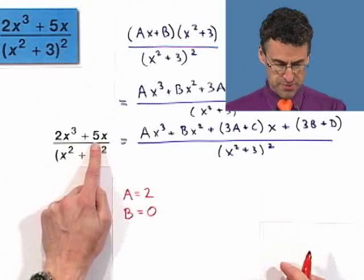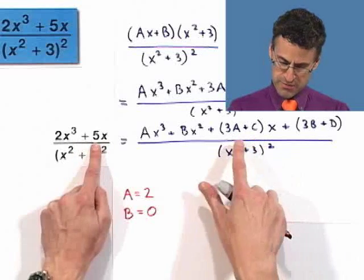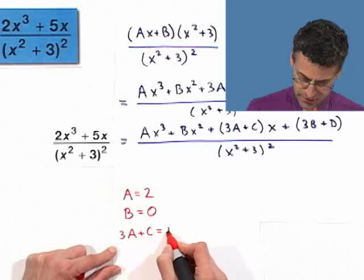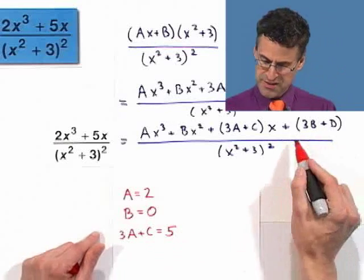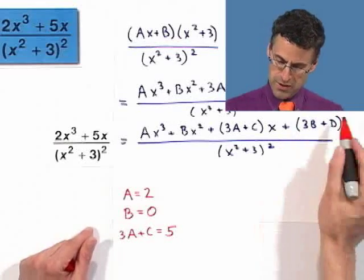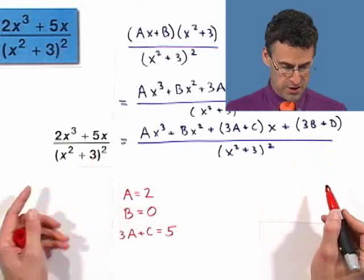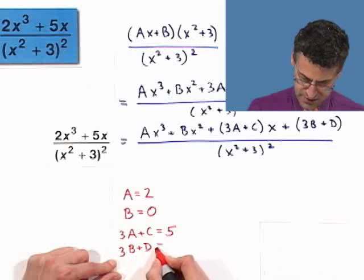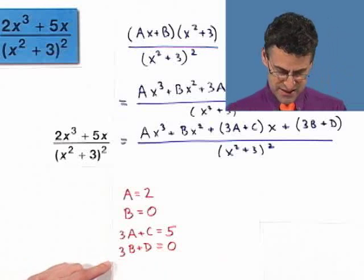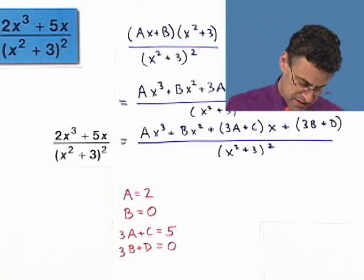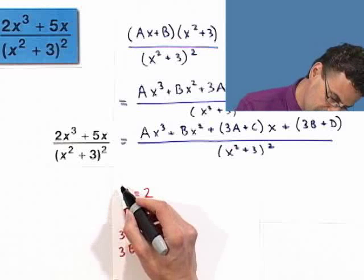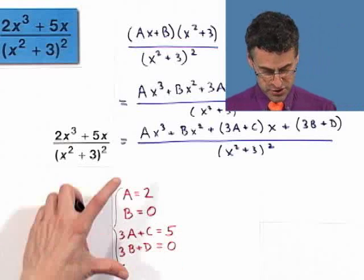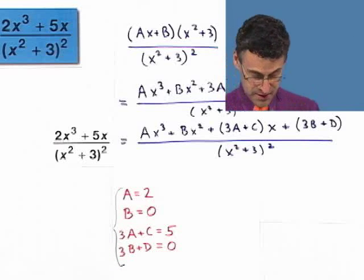Now, the coefficient on the x term here is 5 and the coefficient on the x term here is all that stuff. So that means that 3A plus C must equal 5. And finally, the constant, and notice that's why I like to lasso it in one little parenthesis there, that constant equals the constant here, which is 0. So, again, we see 3B plus D equals this time 0. And that's the system, linear system, that I want to consider.